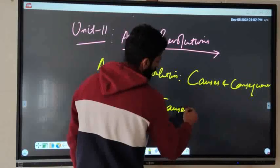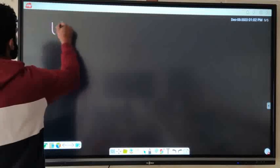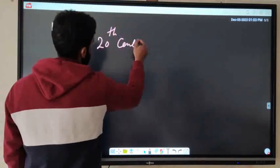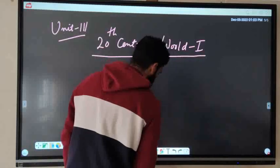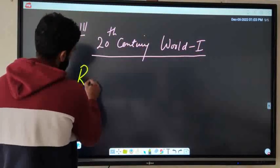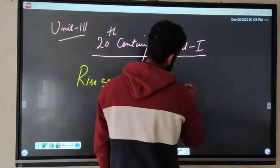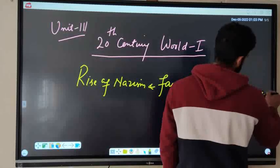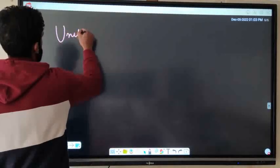Coming to unit three, that is 20th Century War First. The important question in this unit is Rise of Nazism and Fascism — causes and consequences.